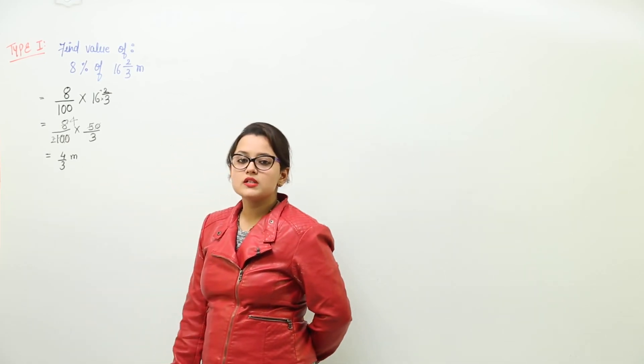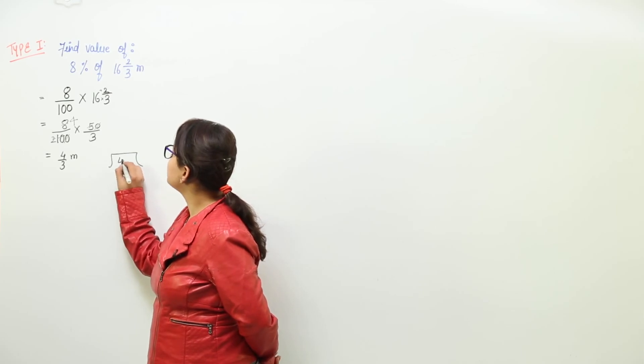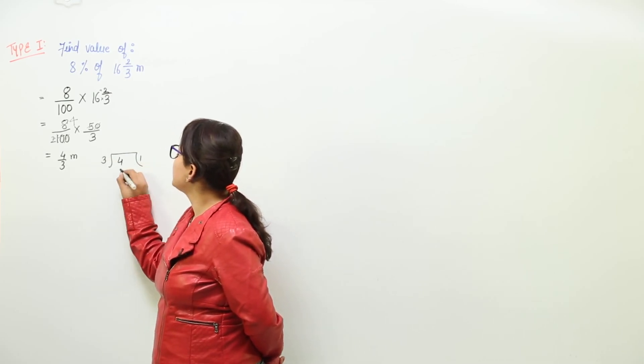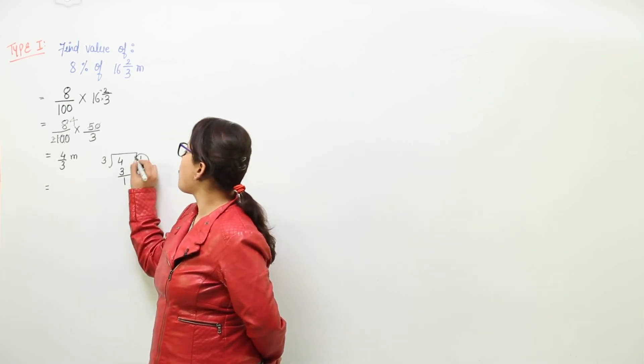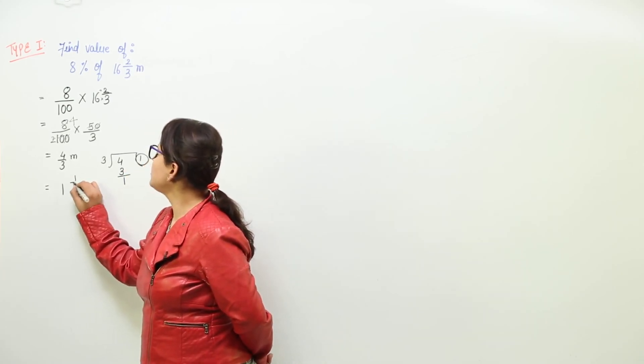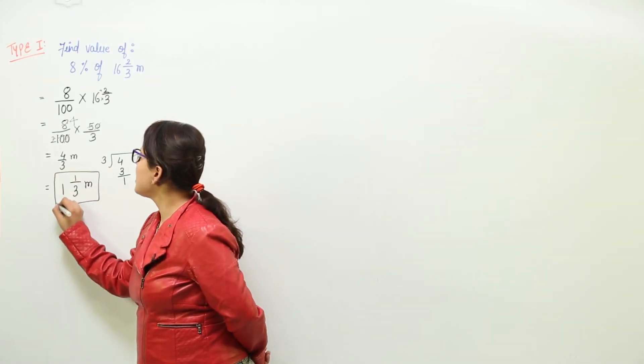Either you can leave the answer as 4 by 3 meters, or you can convert it into the mixed fraction. That would be this. So this can be written as 1 whole 1 upon 3 meters. So this is the answer.